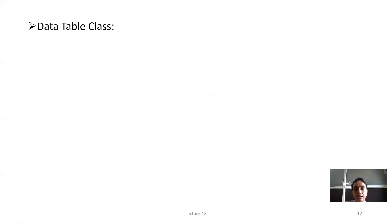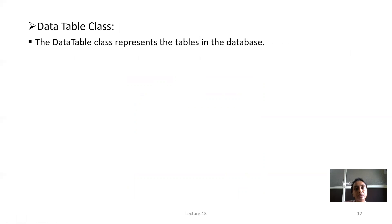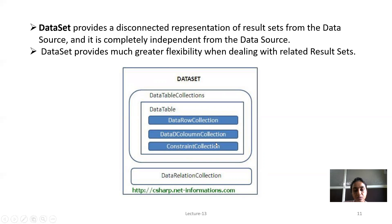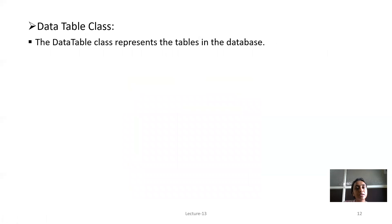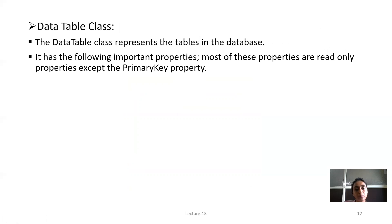Next is the data table class. The data table class represents tables in the database. A table contains respective rows, columns, and constraints. Wherever we need to store two-dimensional data, we need a table, and each table is contained in a particular dataset. Each table collects multiple rows and multiple columns, and constraints such as primary key and foreign key are also provided. The dataset contains all three collection classes.